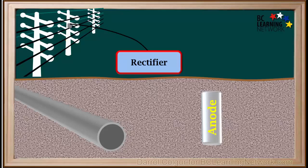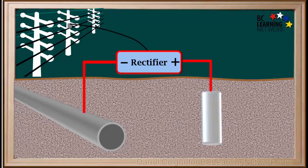Now we install a device called a rectifier. A rectifier is connected to an alternating current, or AC, supply line. What it does is convert AC to direct current, DC, so it has a positive and negative terminal. The positive terminal is connected by a wire to the anode, and the negative terminal is connected by a wire to the steel pipe. The rectifier pulls electrons from the anode and pushes them onto the pipe.